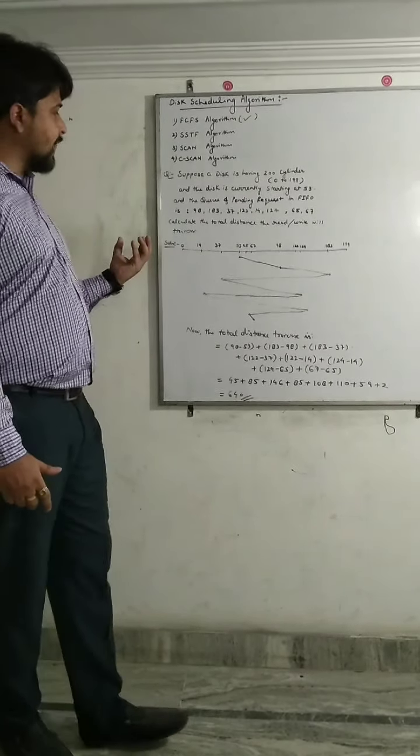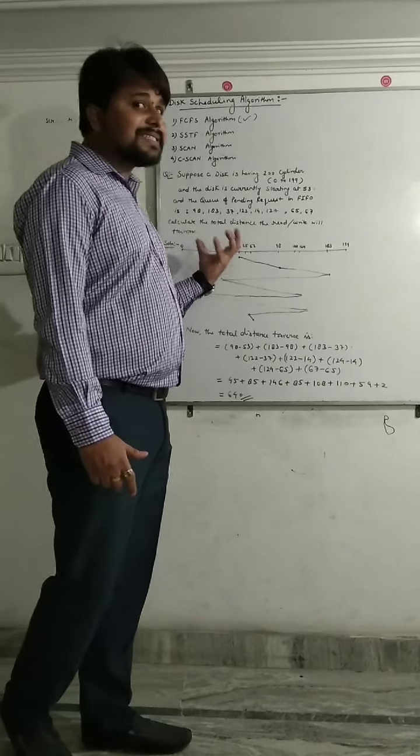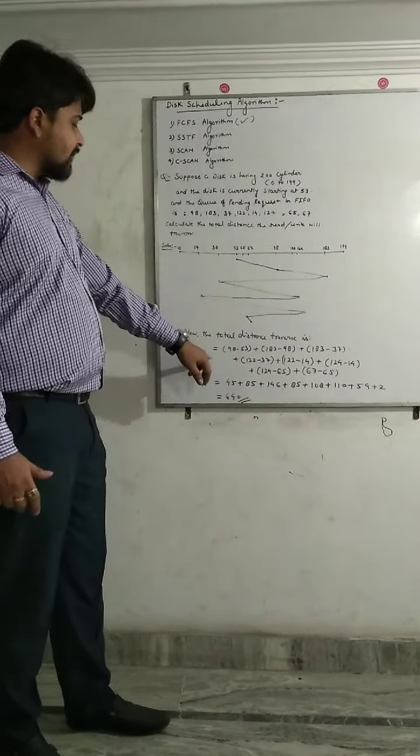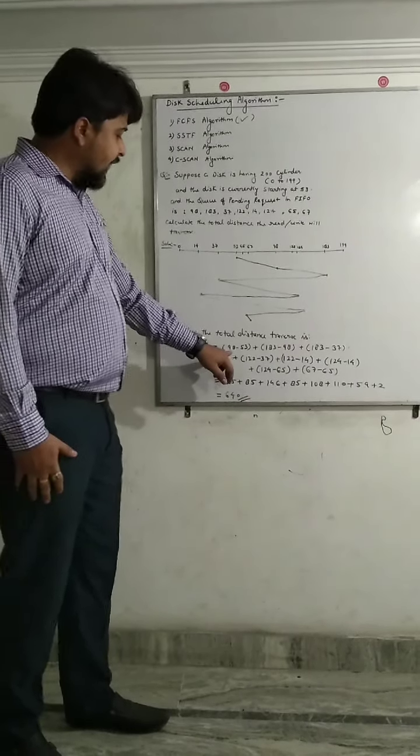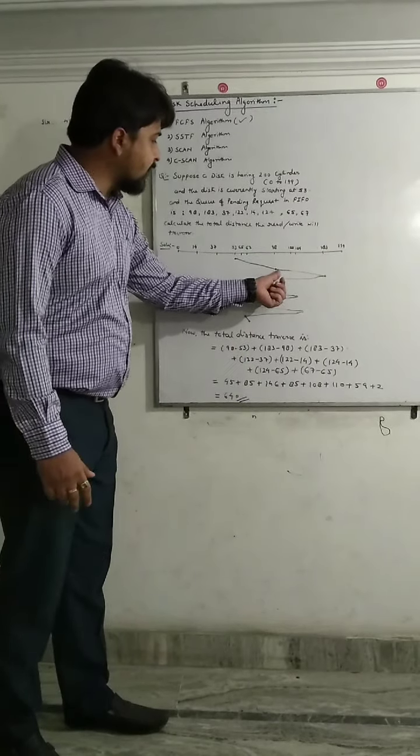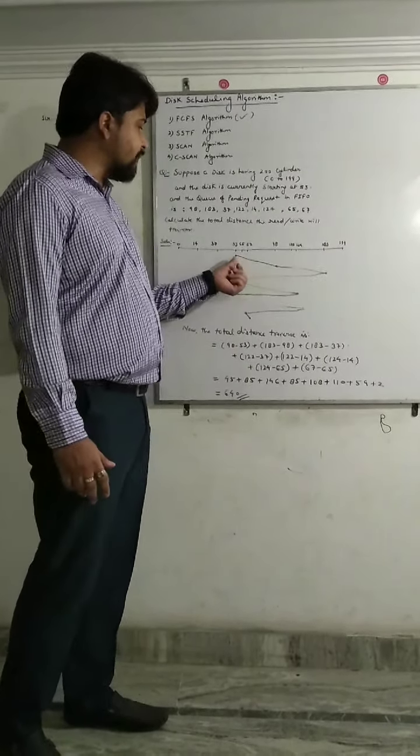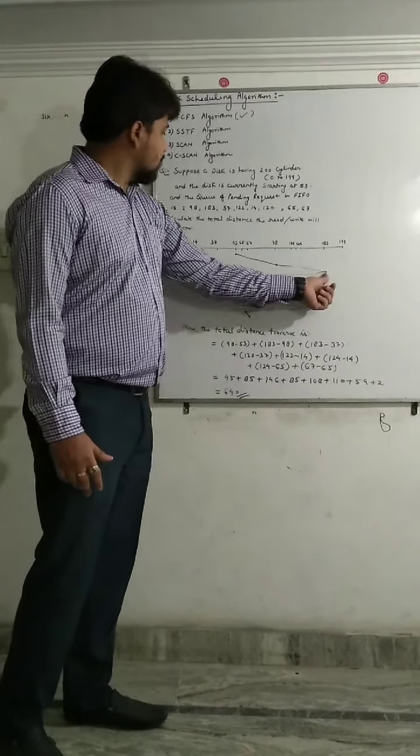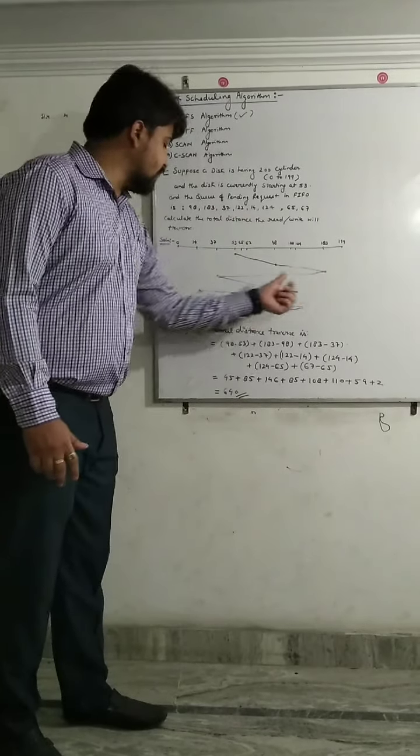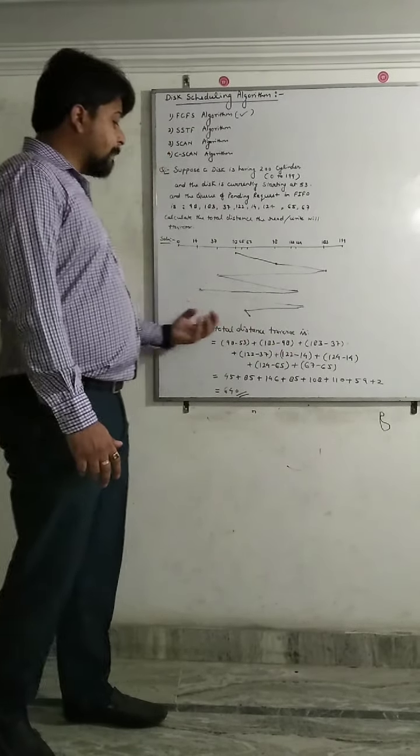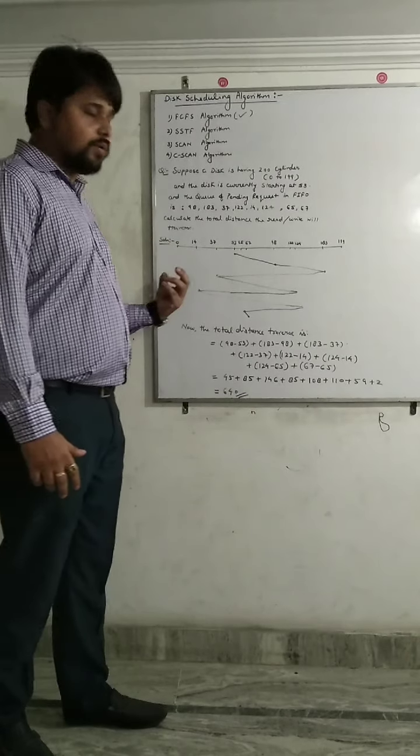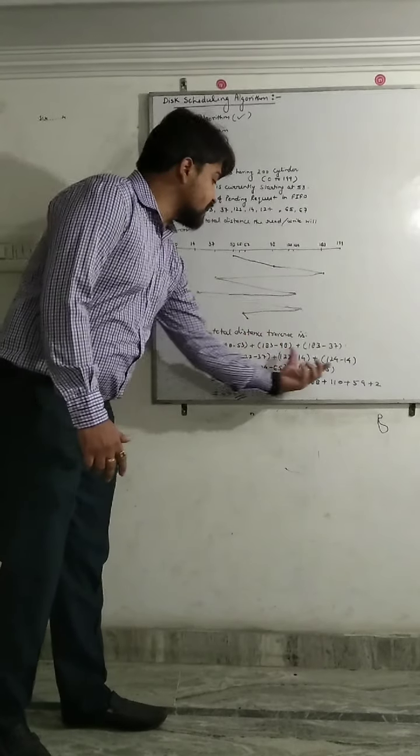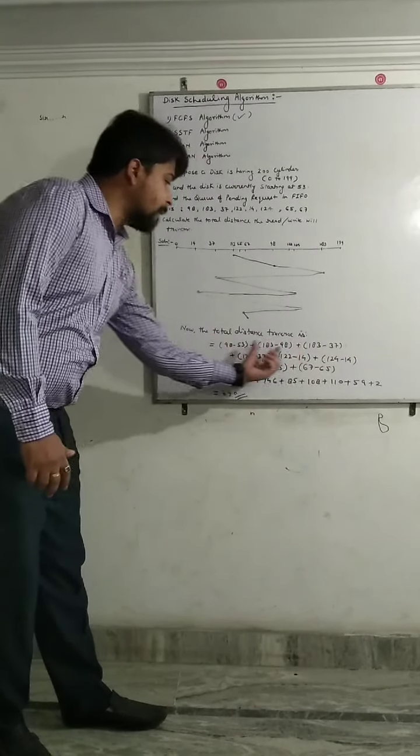Now the next task is to calculate the distance. The total distance traversed is 98 minus 53, which is our first traversing distance. Next is 183 minus 98, and we have to subtract like that, taking the maximum value and minimum value at each step.